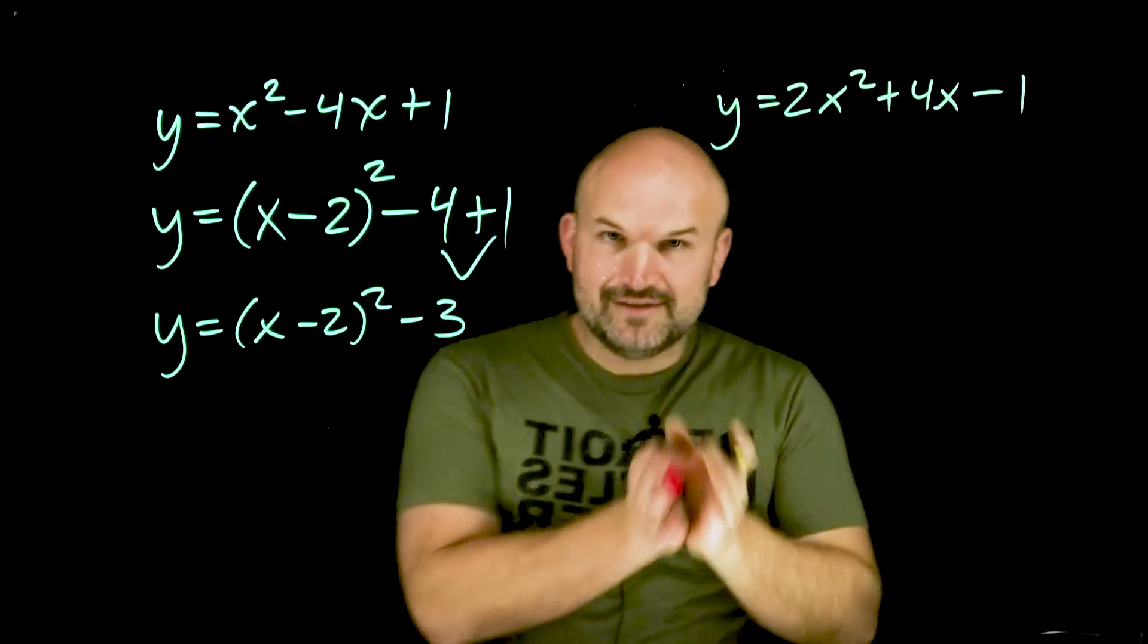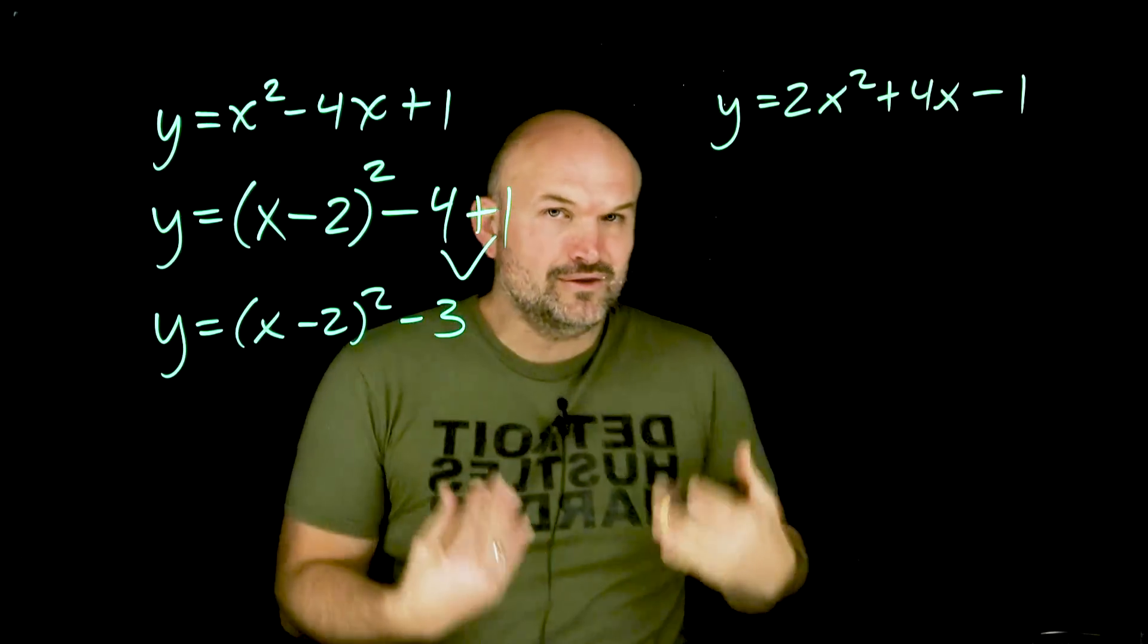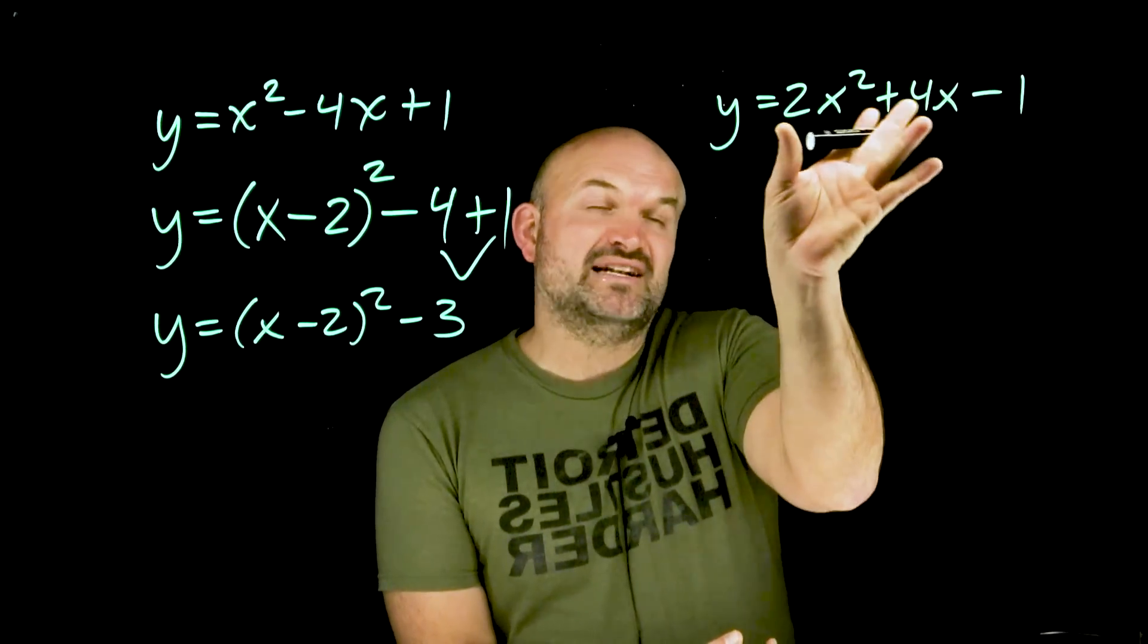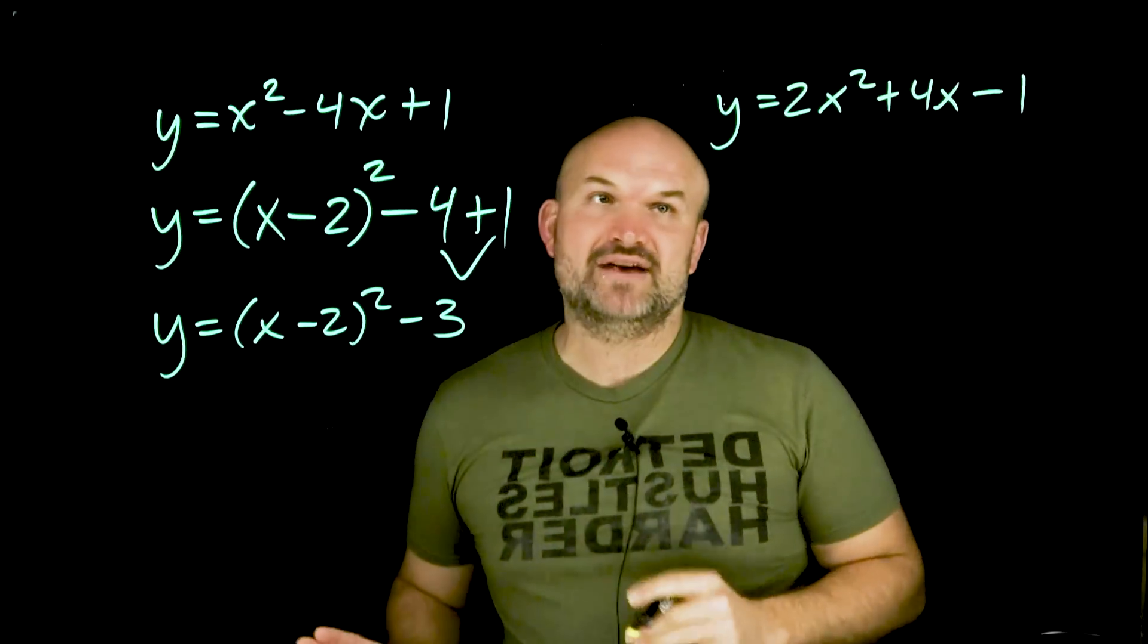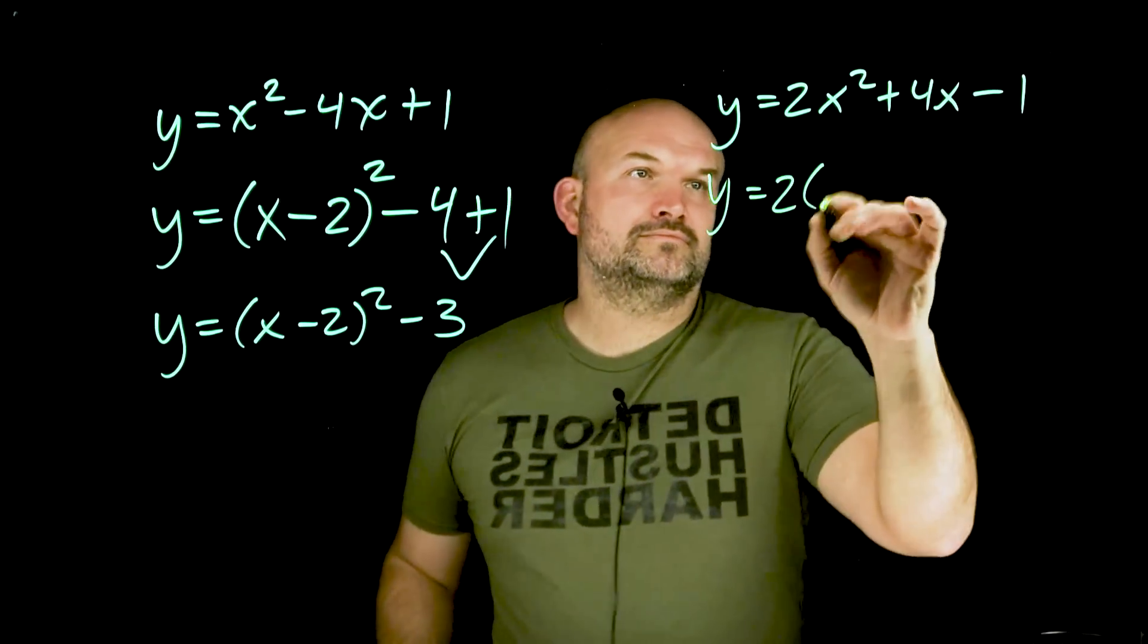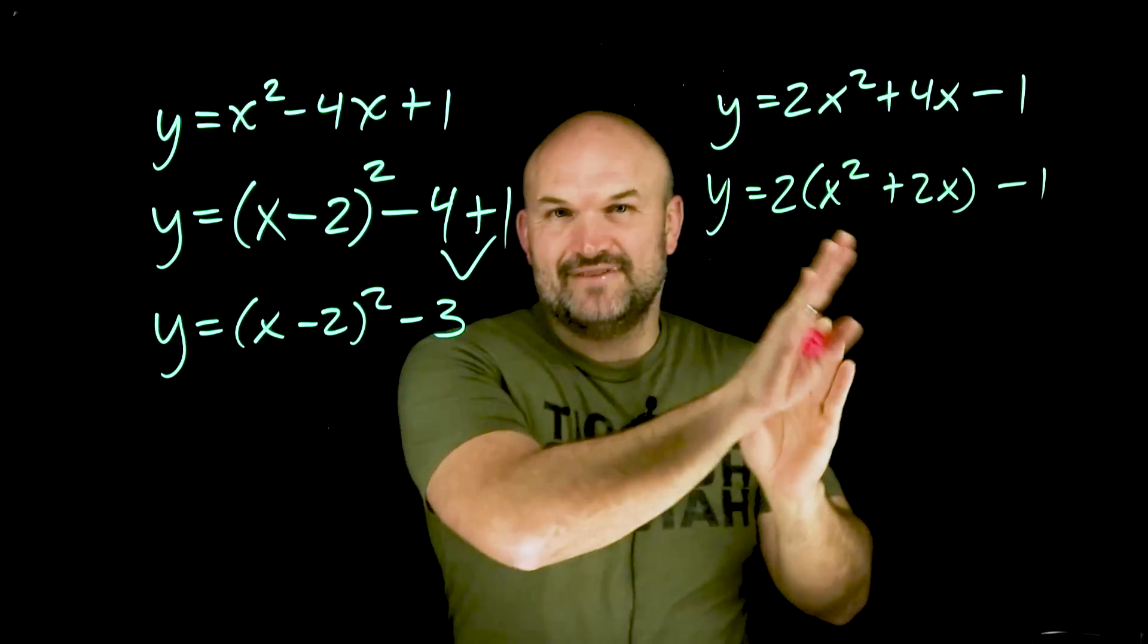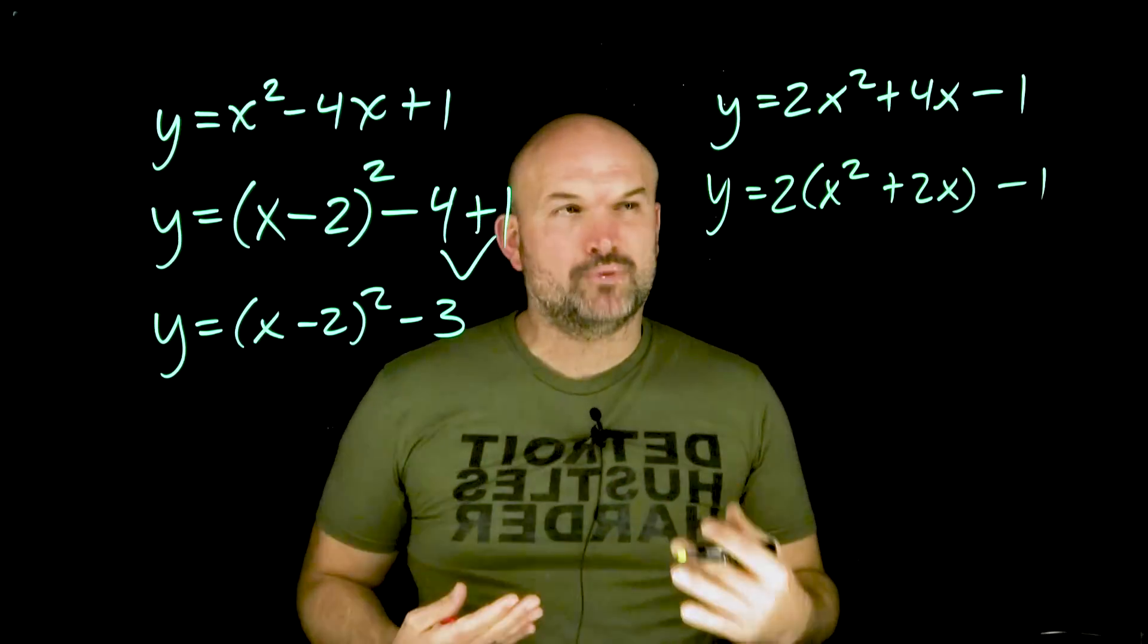Okay, so again, if you remember on completing the square, we can only complete the square when our a is going to be equal to one, right? So, what we do want to do is make sure on these first two terms, we factor out that value two first. Okay, so now we have exactly our identified, our correct b, and that's what's really, really important about this.